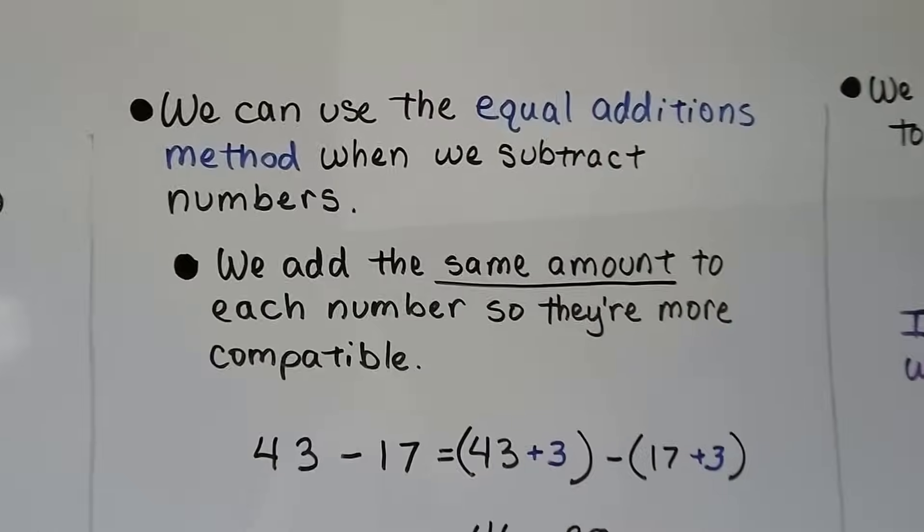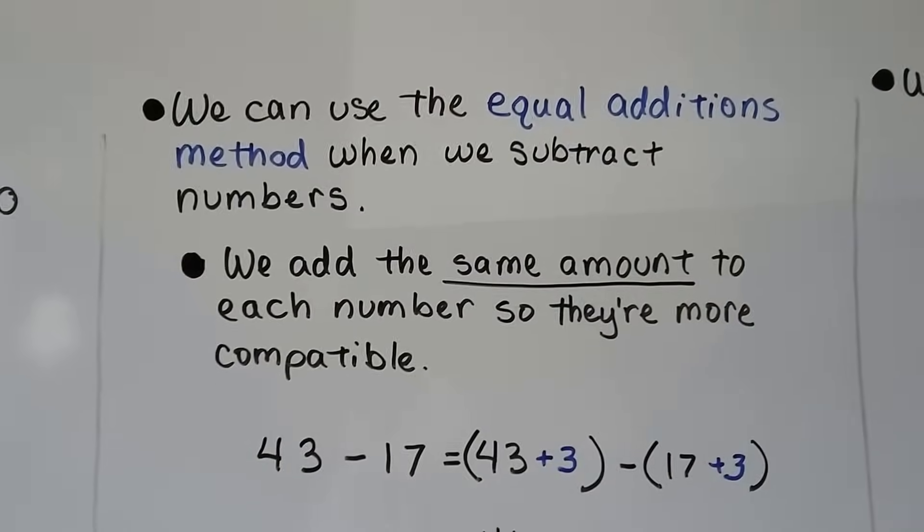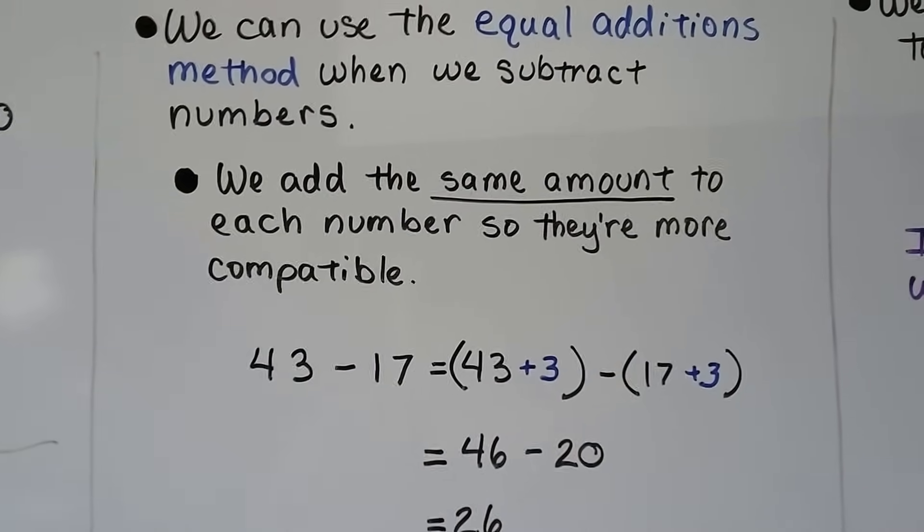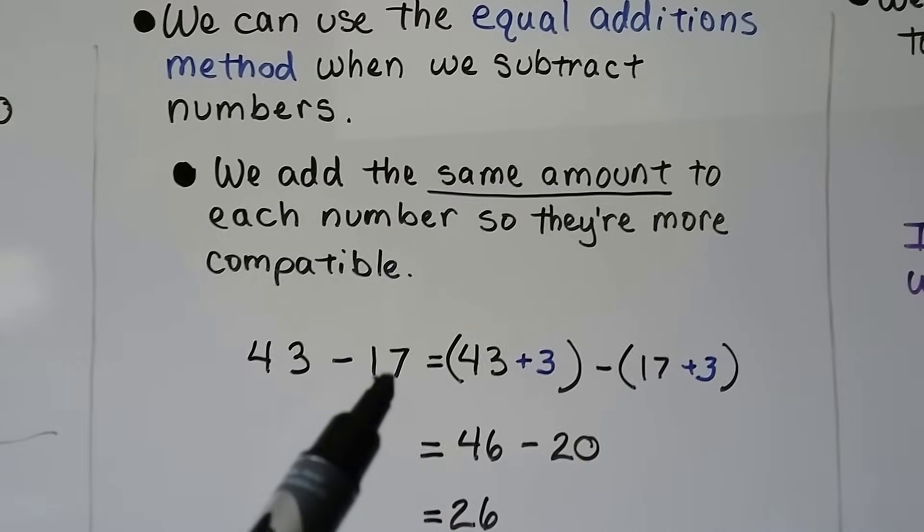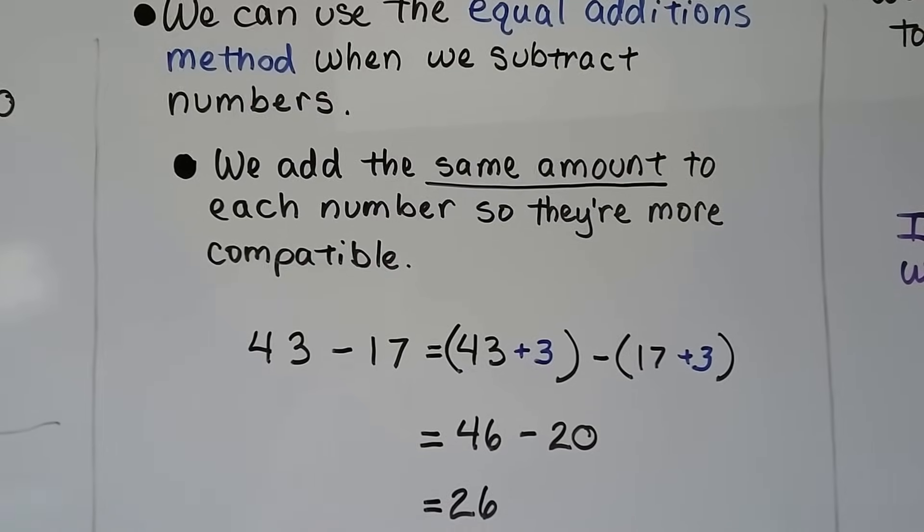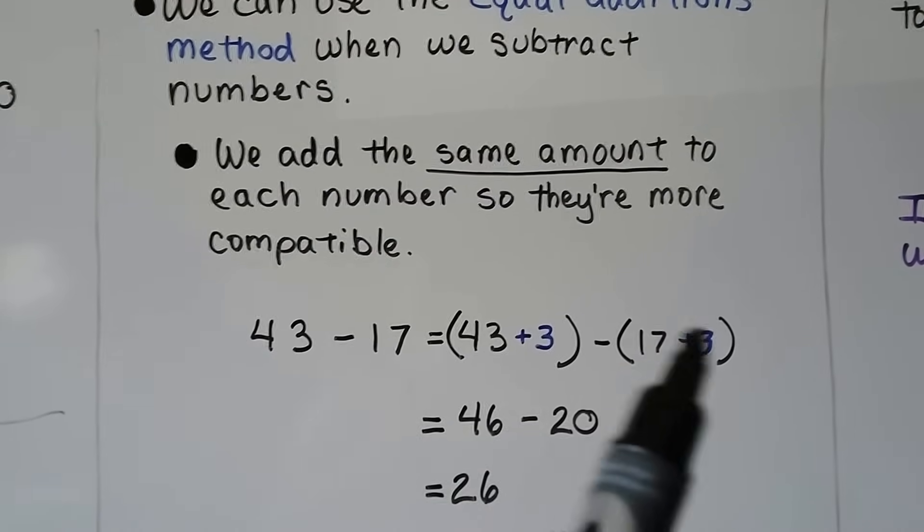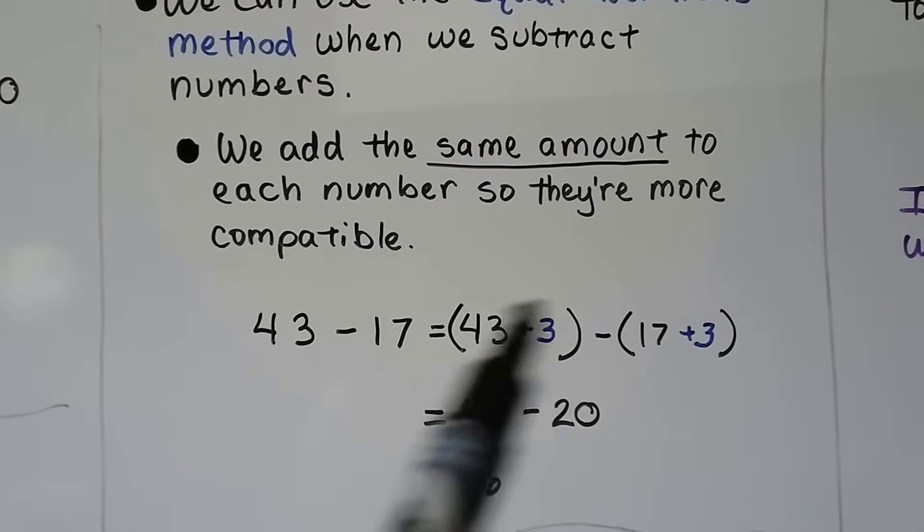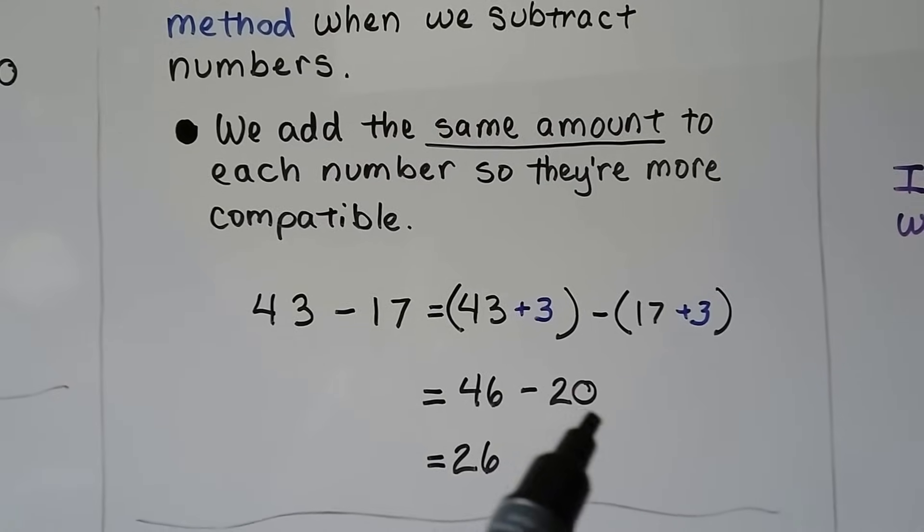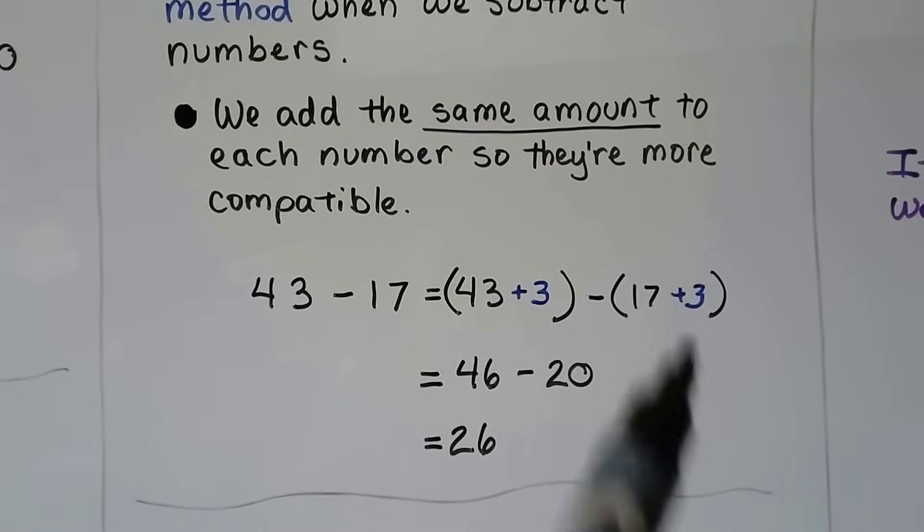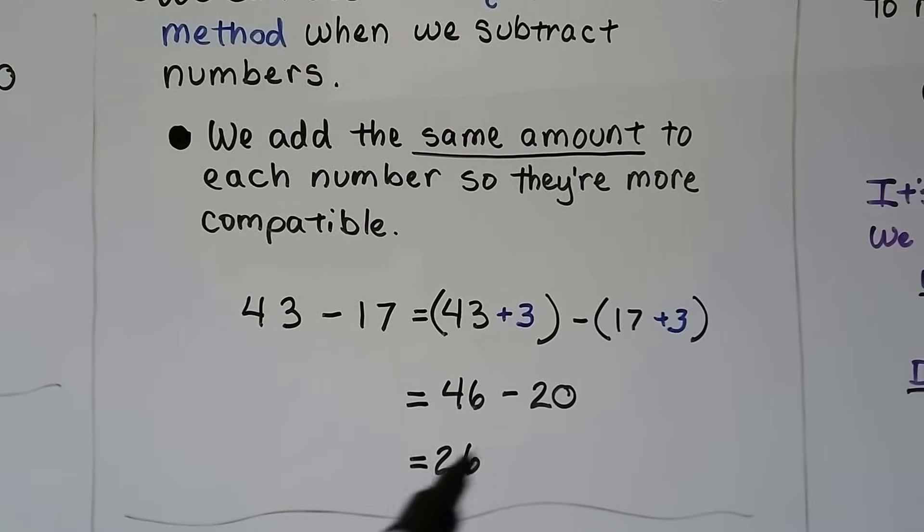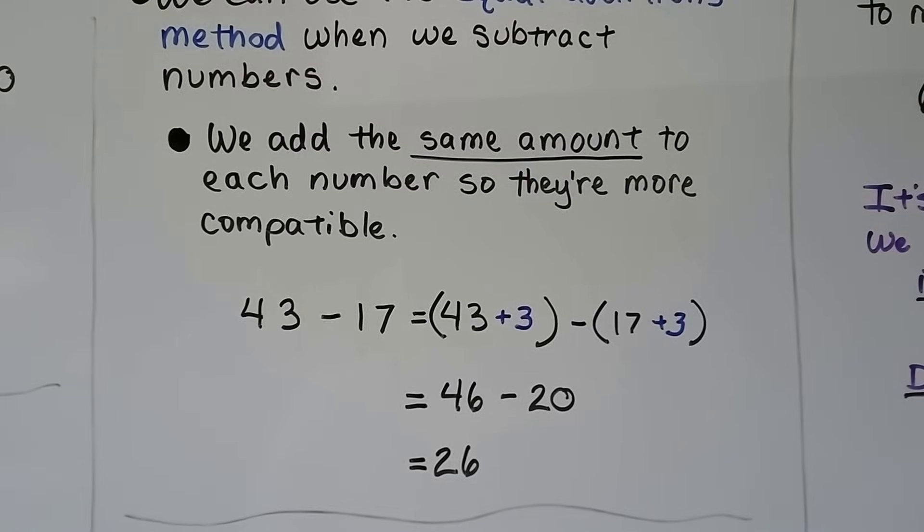Now, we can use equal additions method. When we subtract numbers, we add the same amount to each number so they're more compatible. If we have 43 minus 17, those aren't very compatible numbers. With equal additions method, we can add the same amount to both the subtrahend and minuend. That's going to give us 46 minus 20. We added 3, we added 3. That's going to give us 46 minus 20, which is very easy to do mentally. It's 26.